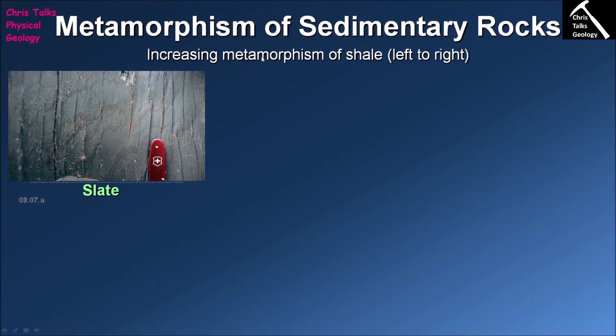We're going to look at some of the metamorphic rocks that can form when we metamorphose a sedimentary rock. The original rock from which our metamorphic rock forms is given a very special term — it's called the protolith. In this case we're going to look at the metamorphism of a muddy sedimentary protolith, a sedimentary rock which is very rich in clay minerals.